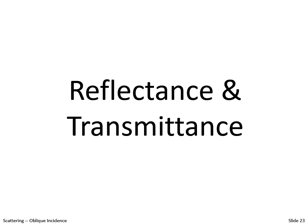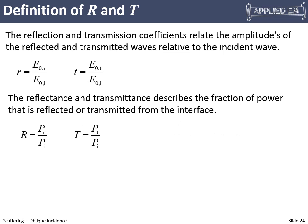Reflectance R and transmittance T represent the fraction of power reflected and transmitted — very different from the amplitude reflection and transmission coefficients r and t. Reflectance is the ratio of reflected power to incident power; transmittance is the ratio of transmitted power to incident power.